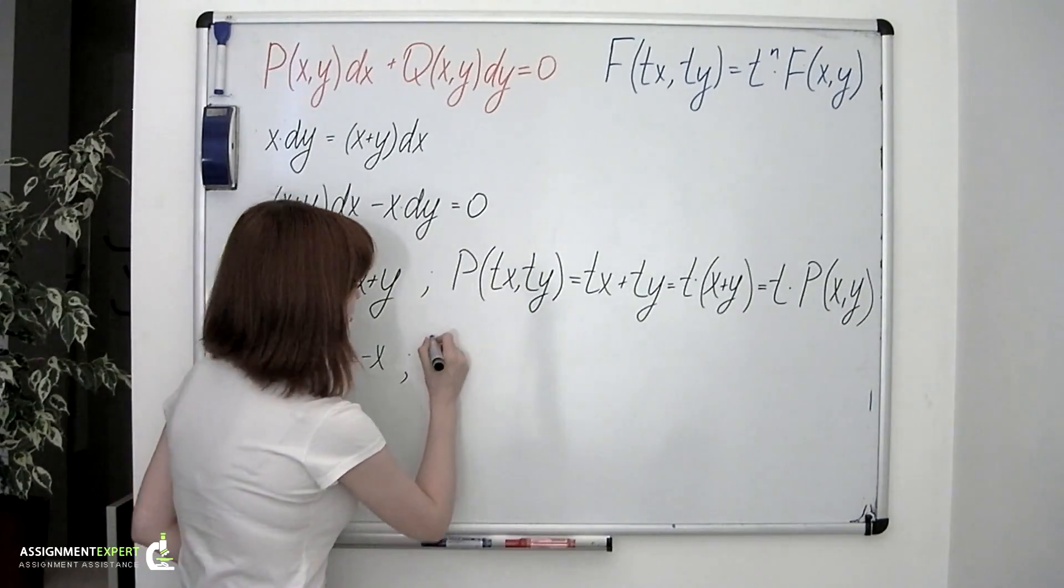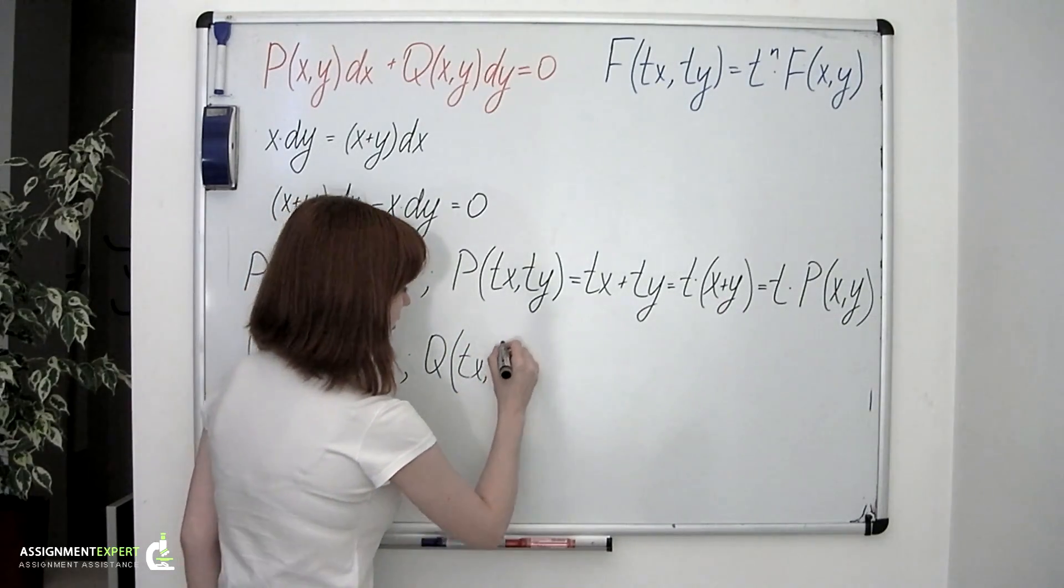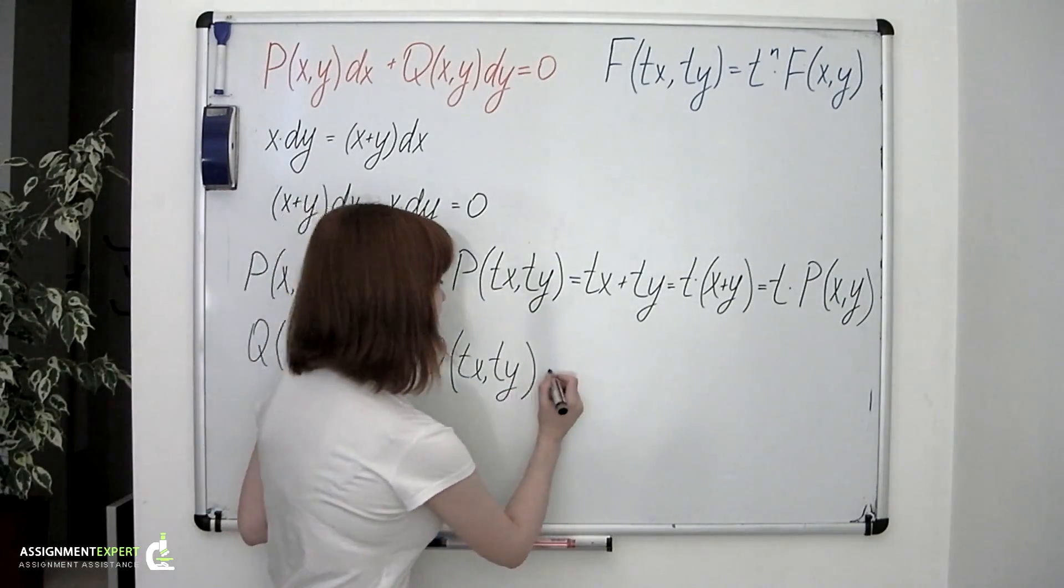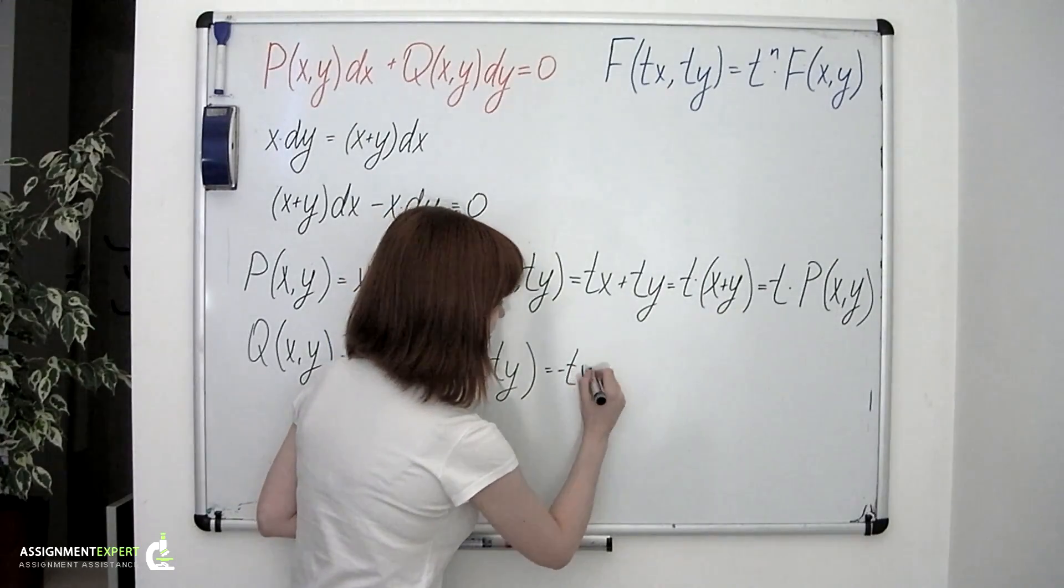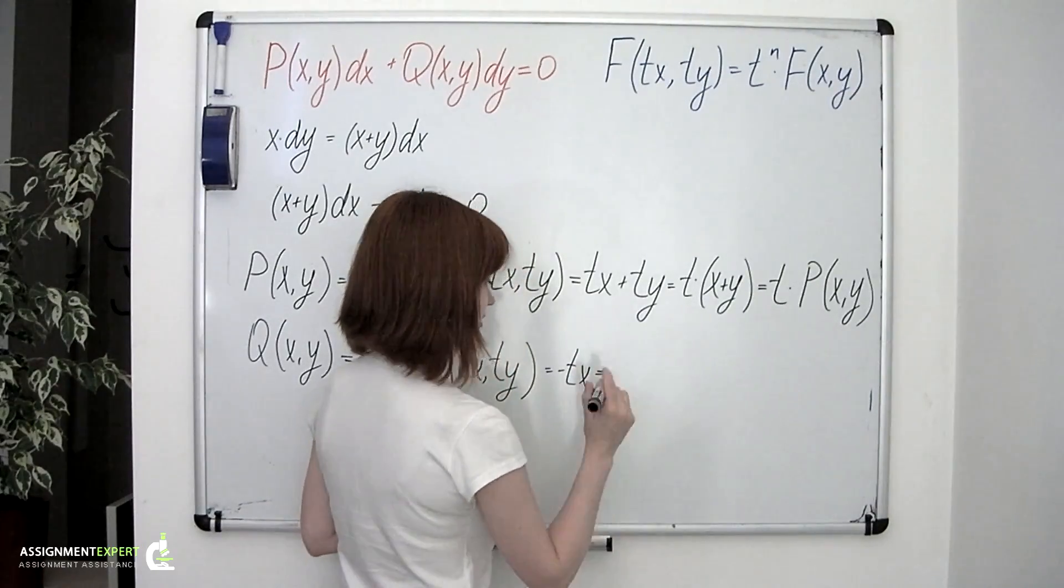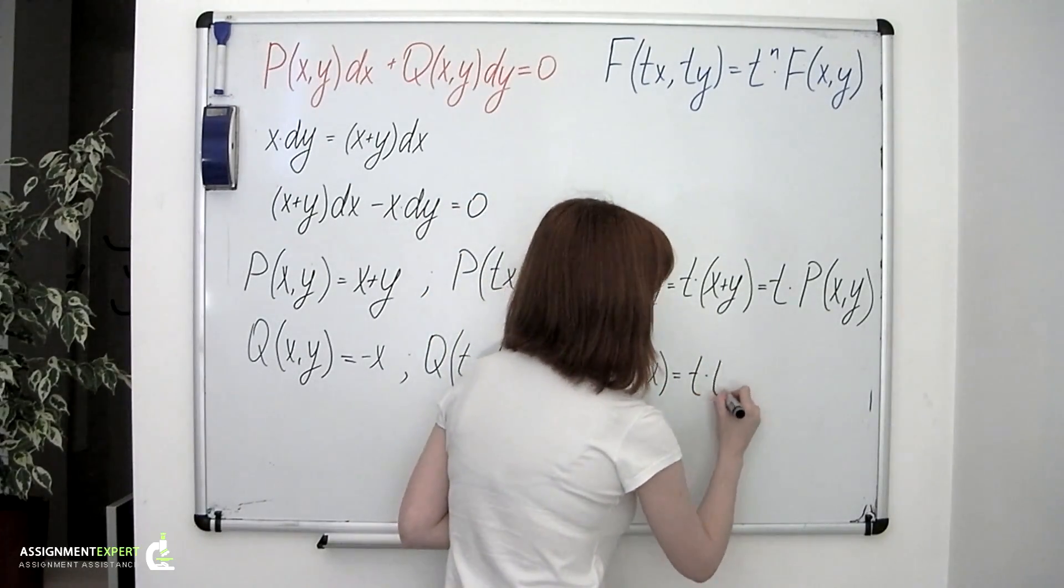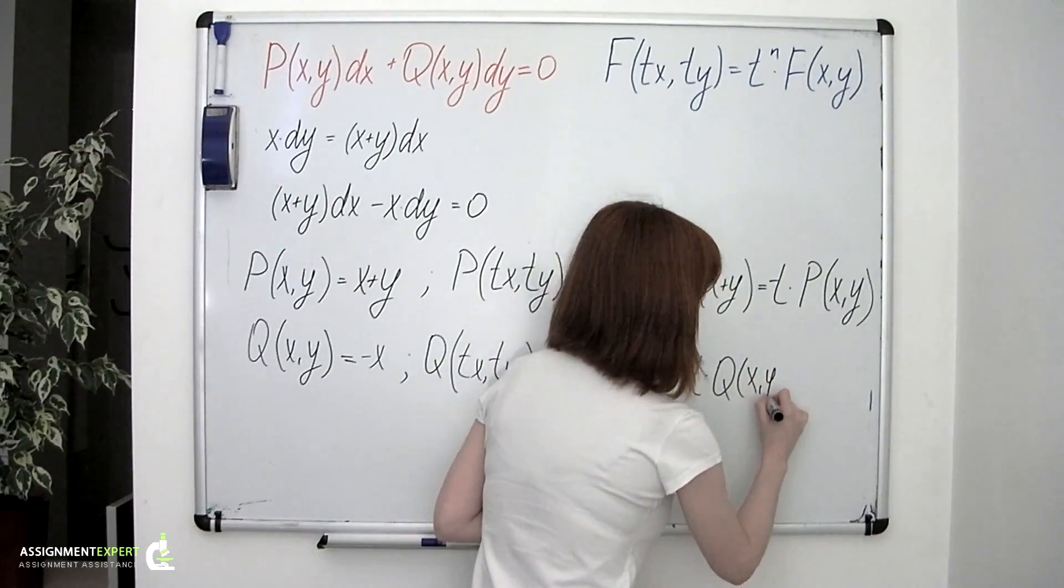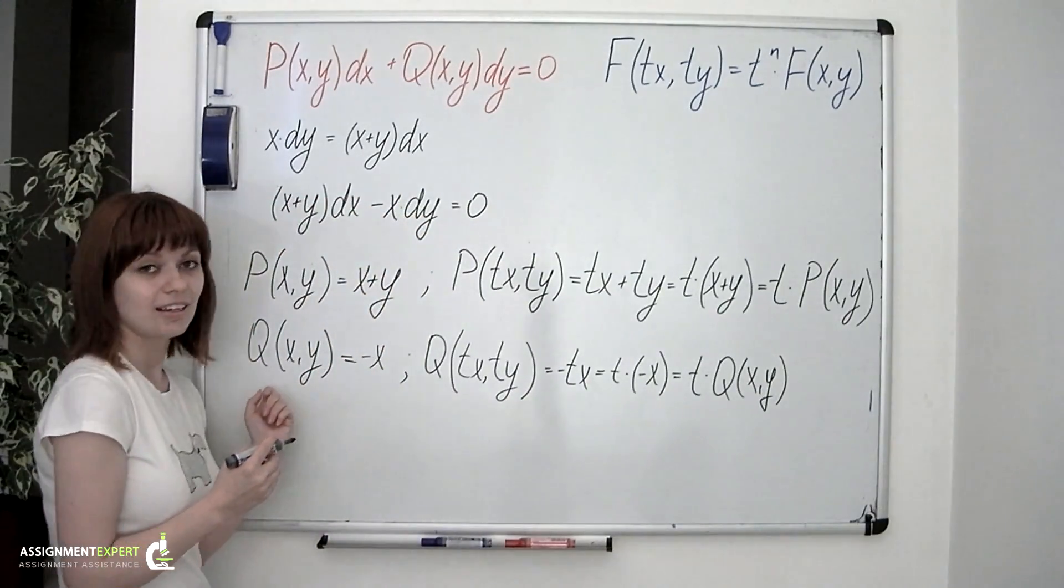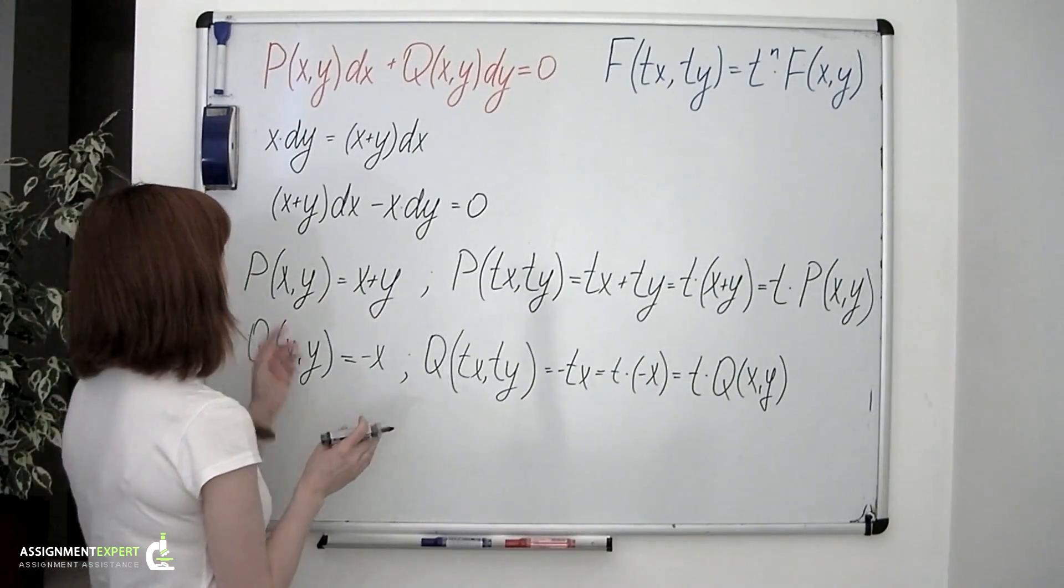Now let's take a look at the Q function. And again, we put tx and ty instead of x and y in the expression of the function. So we have negative tx, which can be also written as t multiplied by negative x, which is the same as t multiplied by Q of x and y. And again, we have t taken to the first power. So the Q function is also homogeneous of the first degree. So this means that the given equation is homogeneous.